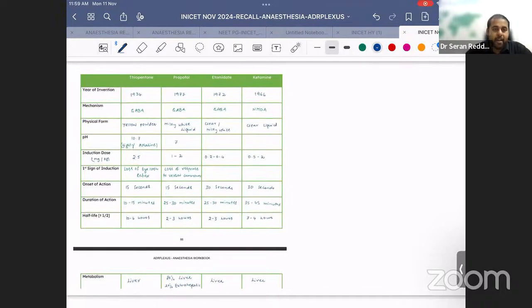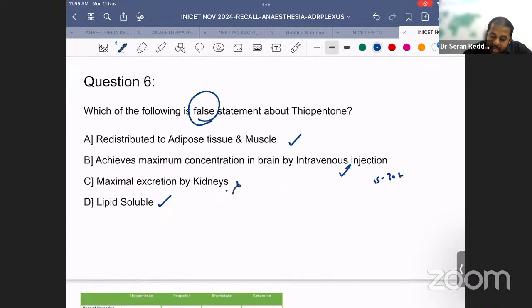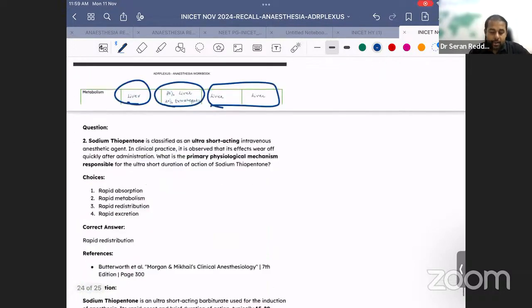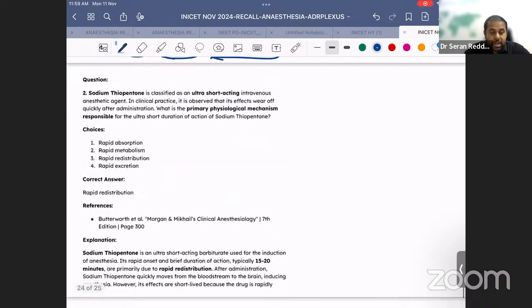Maximal excretion by kidneys - we have discussed when we compare thiopentone, propofol, and ketamine metabolism. Thiopentone metabolism is 80% liver, propofol 80% liver and 20% extrahepatic, and ketamine again liver. So there's no role of kidney here. Even if you know this is the wrong statement, you will get the answer correct. Even if you are not sure about A, B, and D, you can still get the question correct. We have done a similar question - thiopentone is classified as ultra-short acting IV induction agent. What is the primary physiological mechanism? Rapid absorption, metabolism, redistribution, excretion. The answer is redistribution.